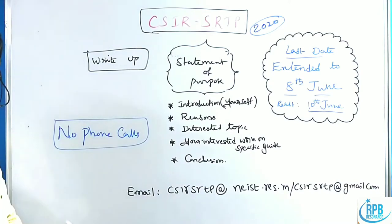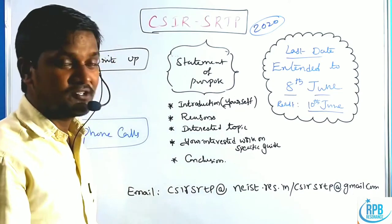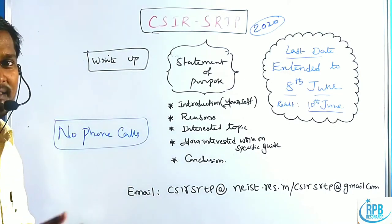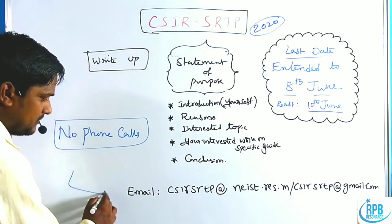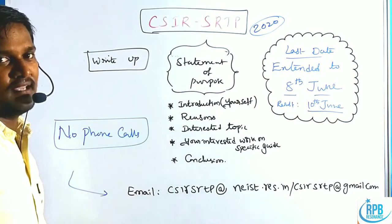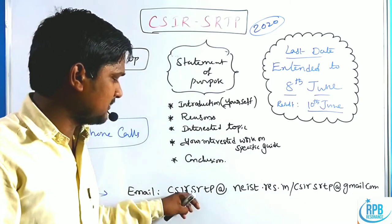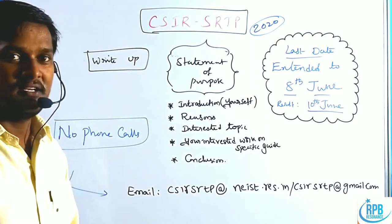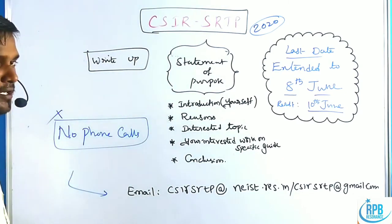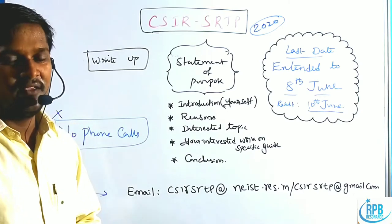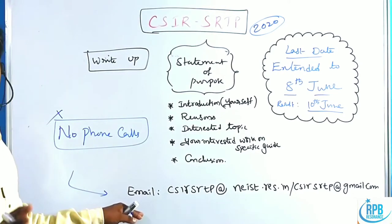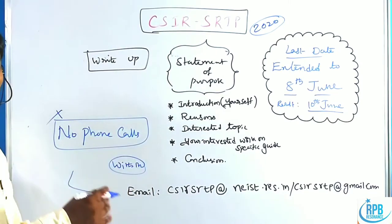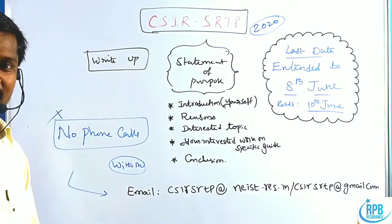They have announced another important notification: whoever was not able to complete their online registration can mail the CSIR SRTP at their official mail address. The email address is csir.srtp@gmail.com. No phone calls are available to clarify your doubts. If you mail that address, they will give a reply within one hour.